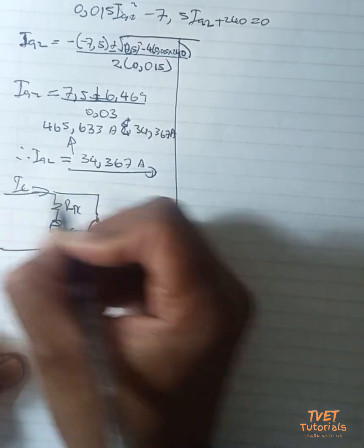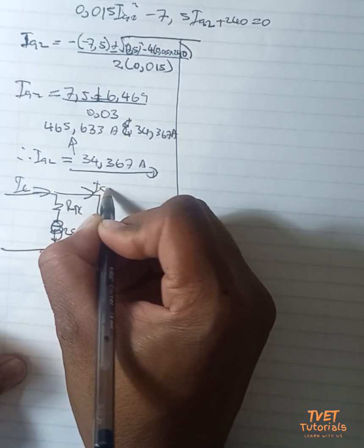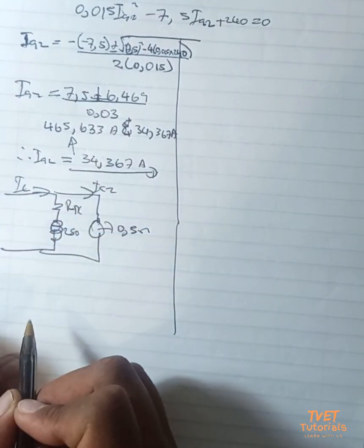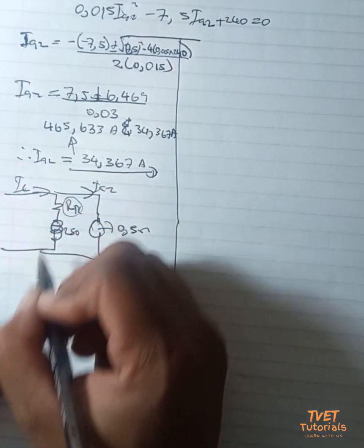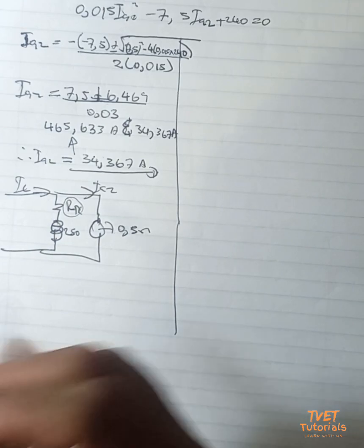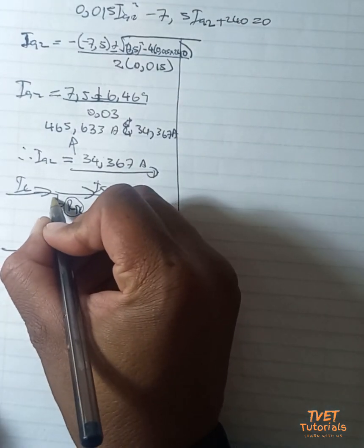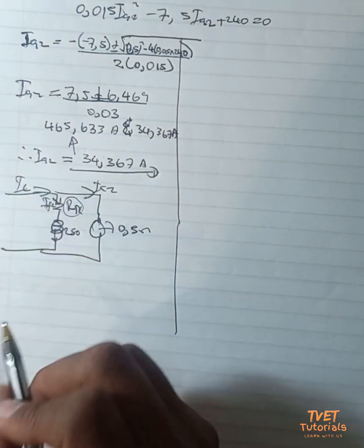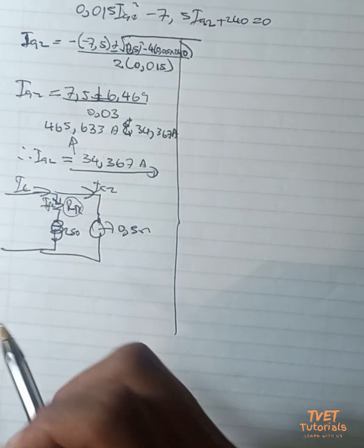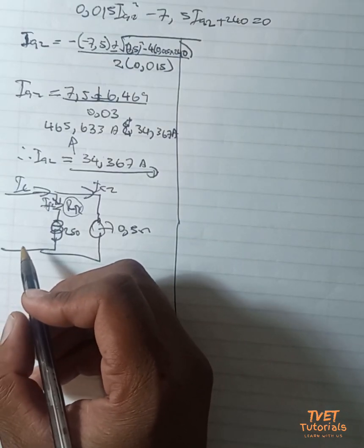I_line, I_a2, which is now a value that we have calculated - we need to calculate the value of R_x. For us to calculate the value of R_x, it means we must have the value of I_field2. How can we get I_field2?